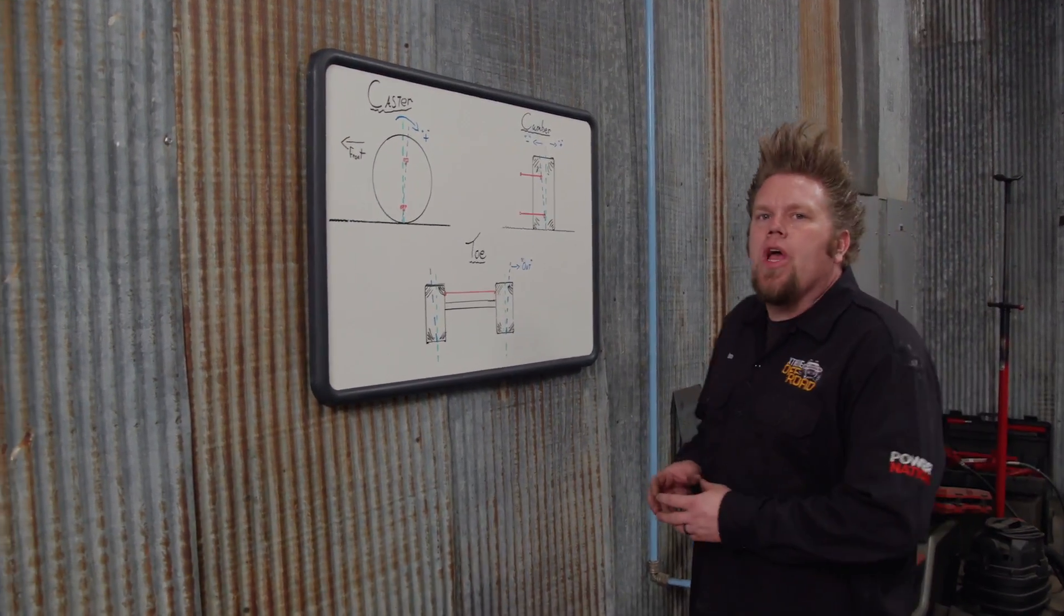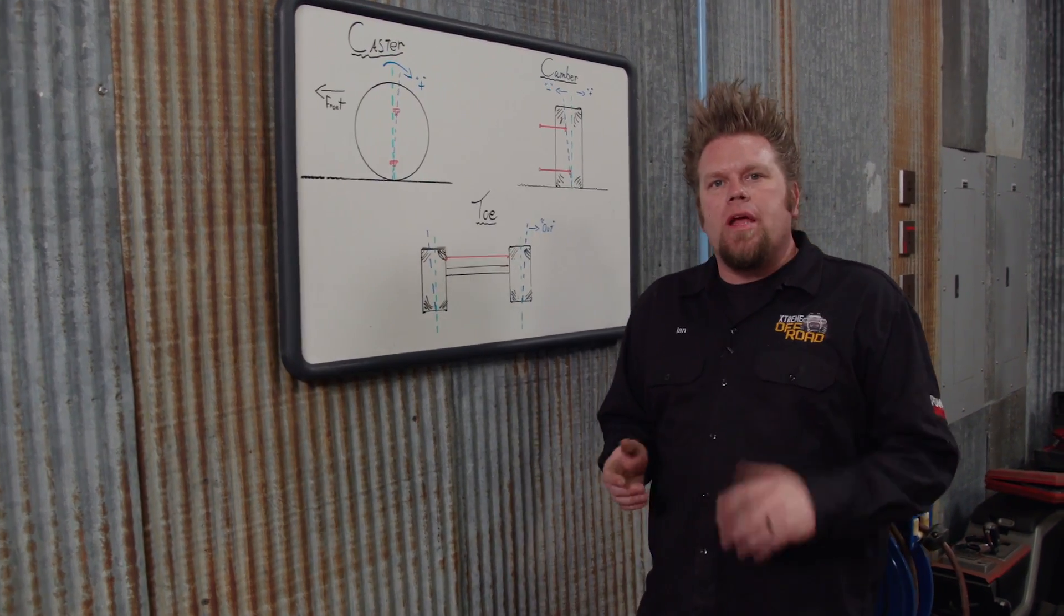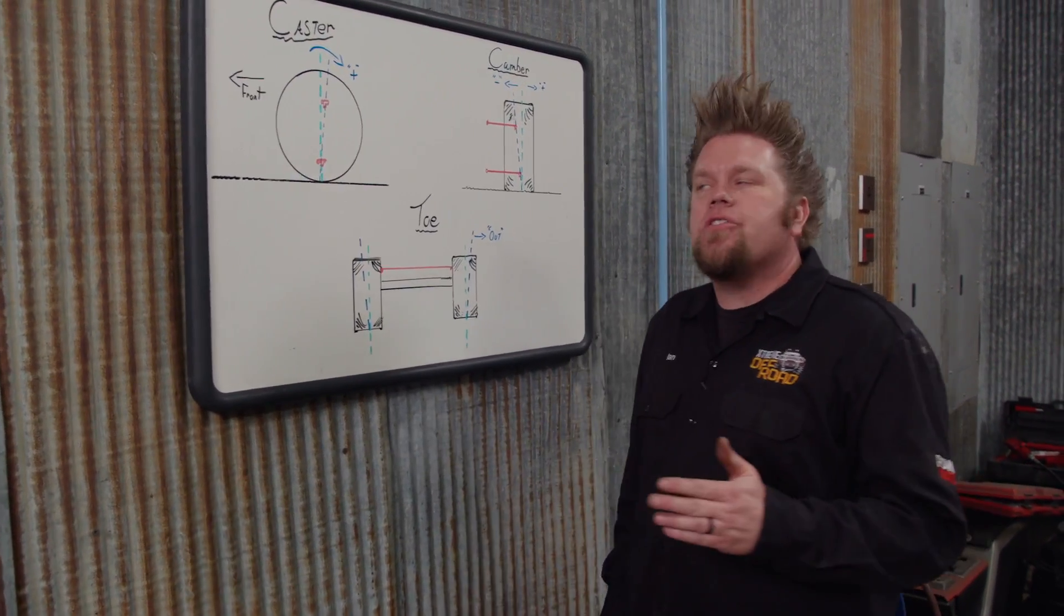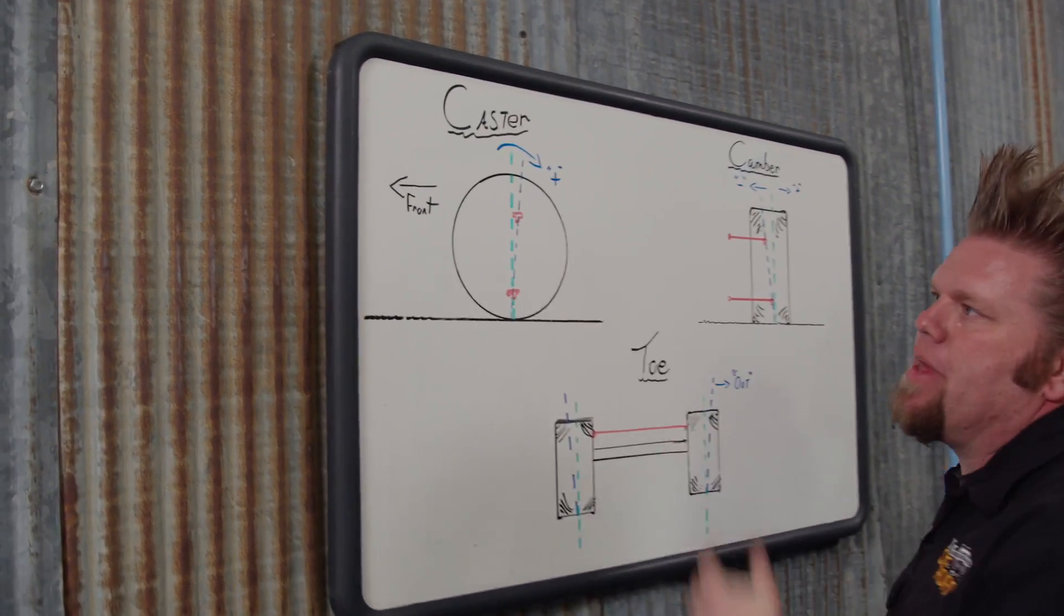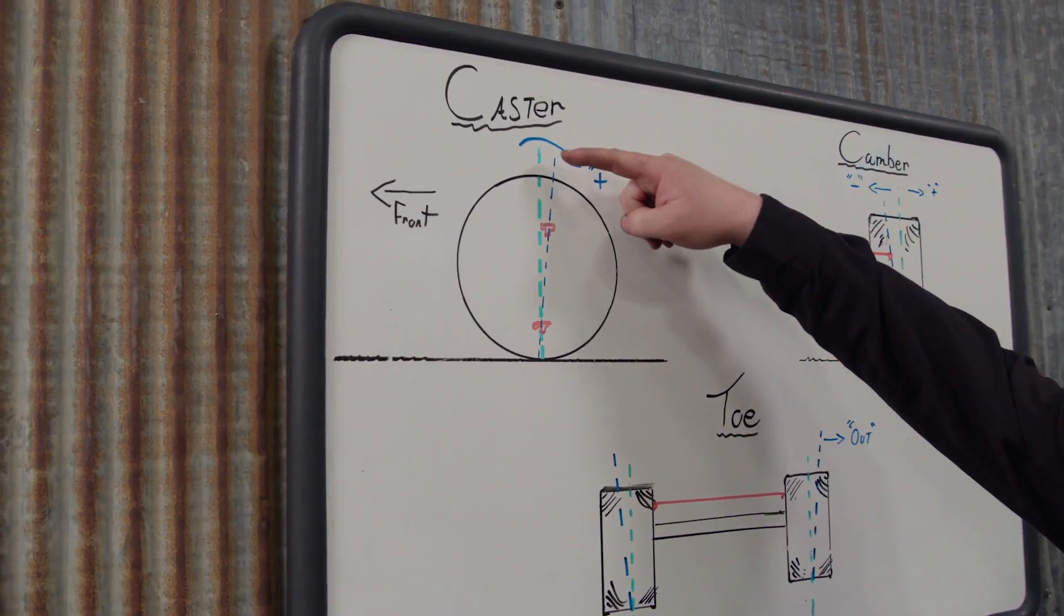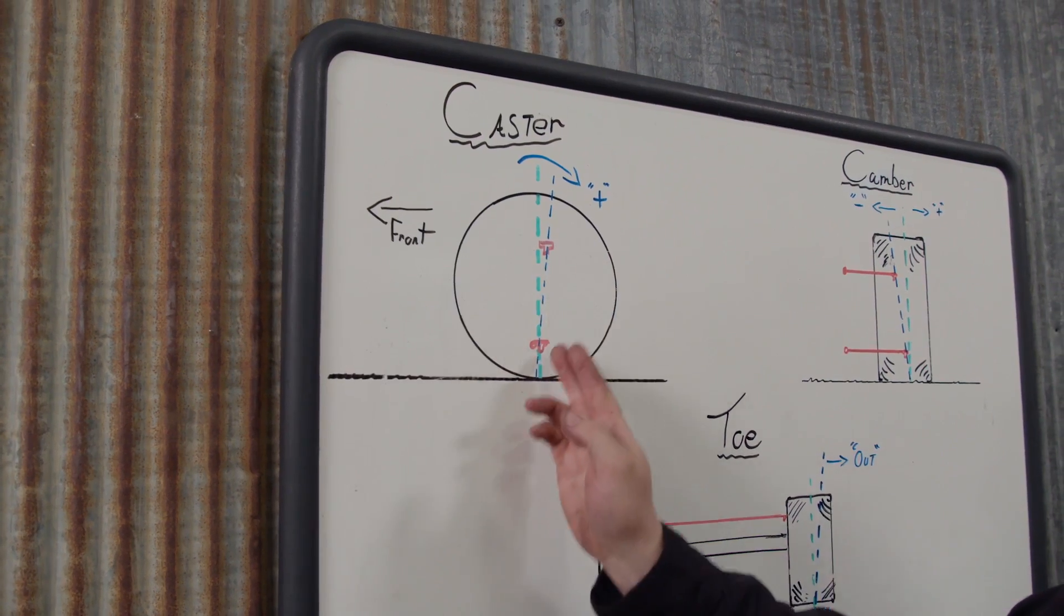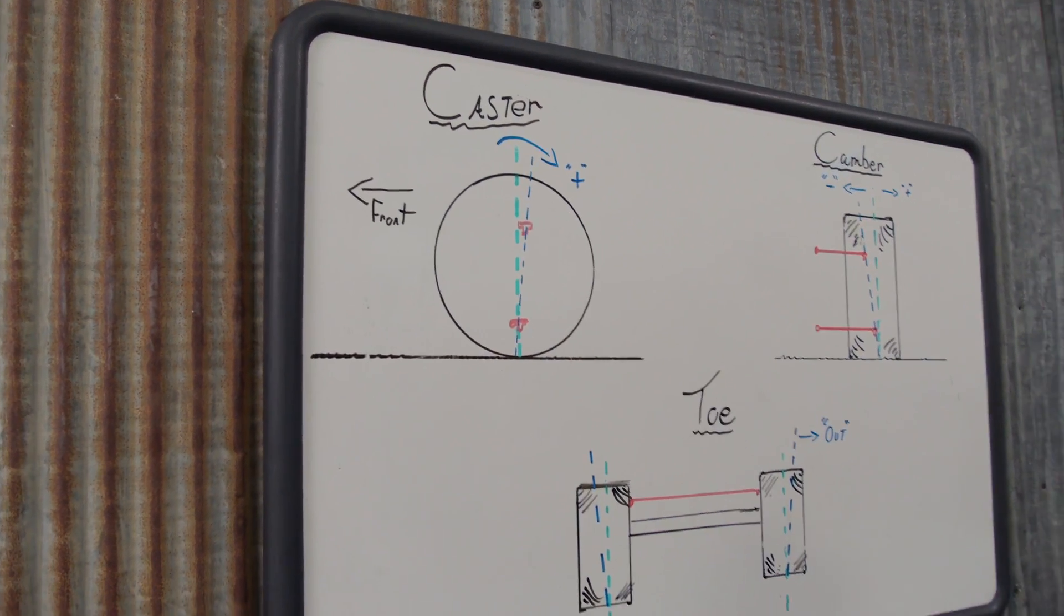When you're building or tuning the front suspension on your rig, you're going to deal with three key alignment angles. The first is your caster angle. Caster is the comparison of true vertical, that's this green line, and its relationship to the pivot points in the suspension, the upper and lower ball joint.